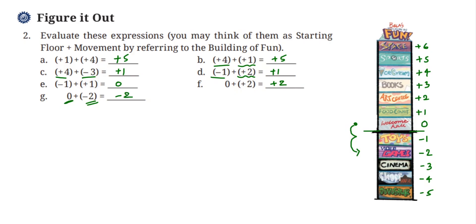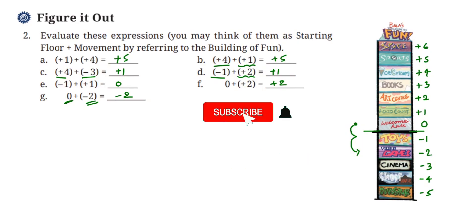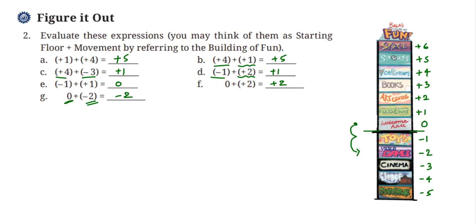So this is how you solve these questions: identify the starting point and check the movement, which is the number you are adding. If it is plus, you are going up. If it is minus, you are going down by that many floors. I hope this question is clear. If you have any questions or doubts, you can drop a comment. Thank you so much for watching.